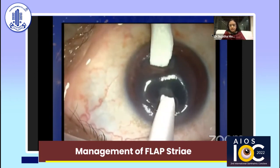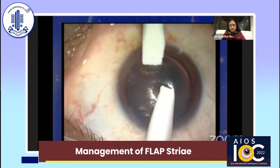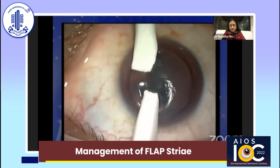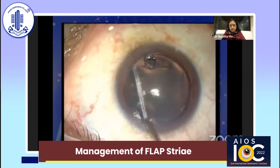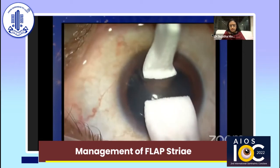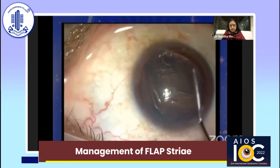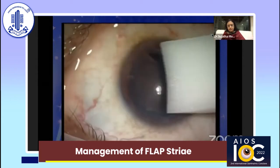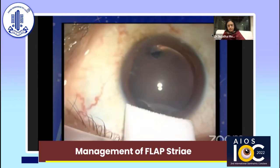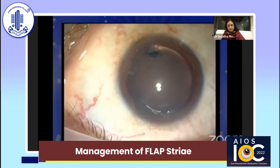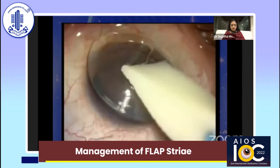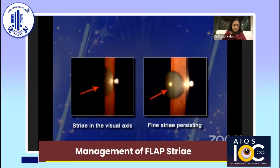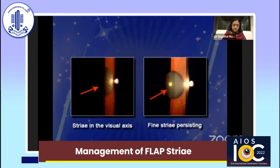Two dry Merocel sponges are used to stretch the striae perpendicular to its direction. The stretching is done repeatedly till the visual axis is clear. The flap is replaced meticulously and a bandage contact lens is applied. The post-operative photo shows clearing of the macrostriae with significant visual improvement.